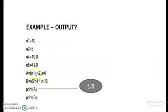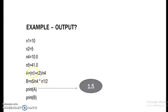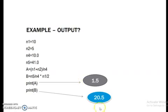For example: N1 equals 10, N2 equals 5, N4 equals 10.0, N5 equals 41.0. For N1 plus N2 divided by N4: 10 plus 5 is 15, then 15 divided by N4 — N4 is a floating point — so you get 1.5 as a floating point answer. For B: N5 divided by N4 times N1 divided by 2. N5 is 41.0, N4 is 10.0, N1 is 10, divided by 2. These two are floating point, so you get the answer 20.5.